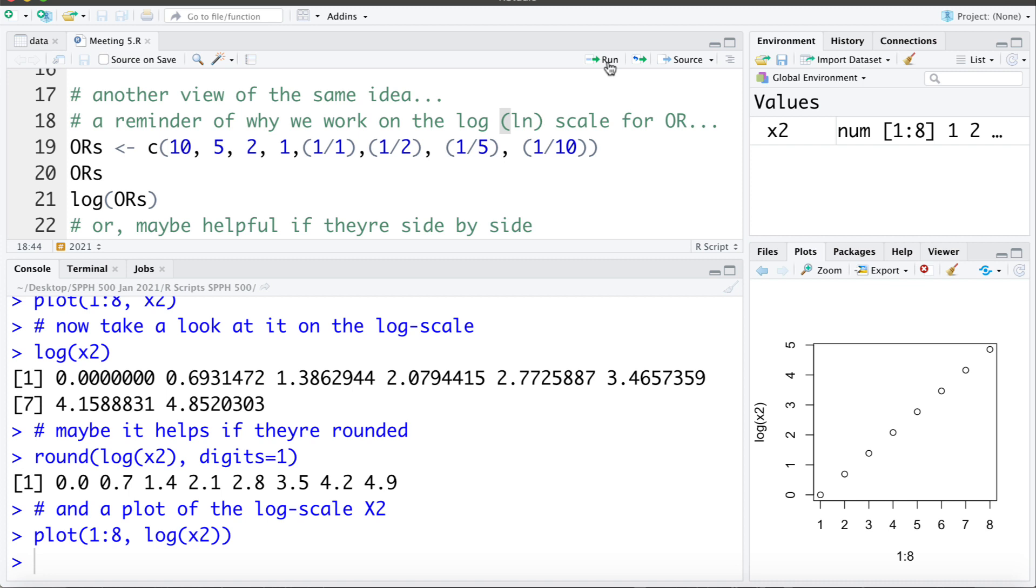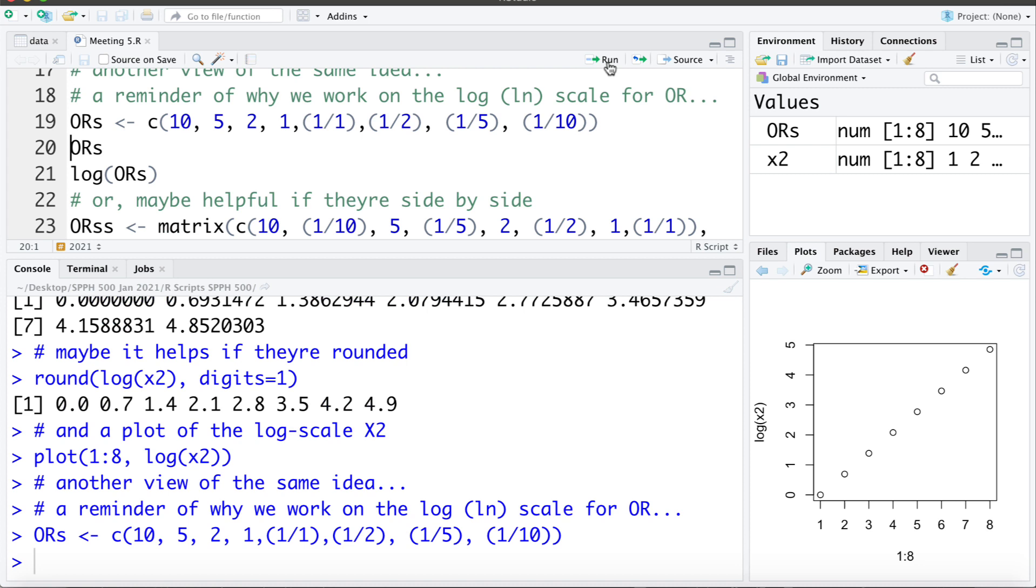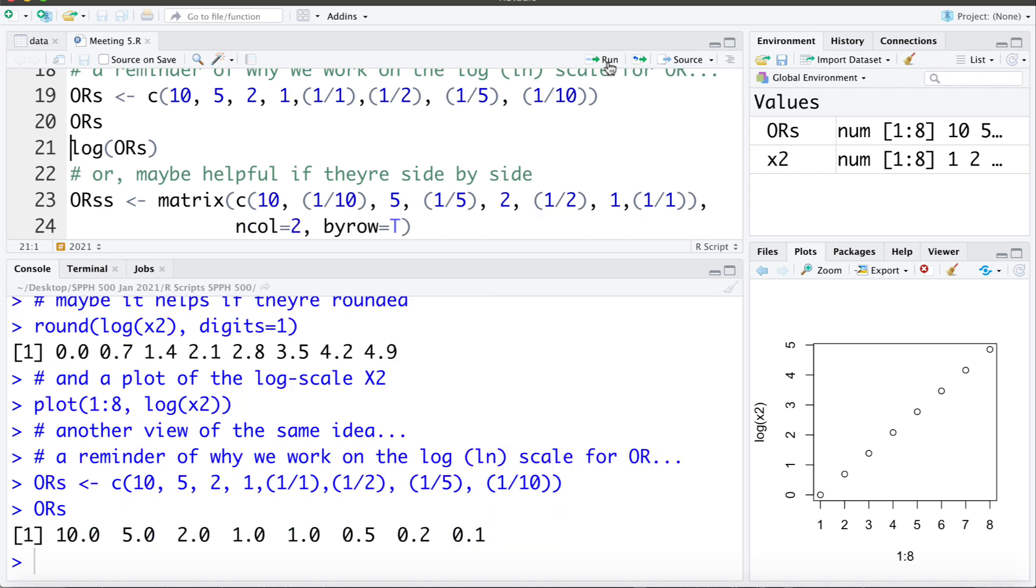10 over 1 and 1 over 10 are just flipping what's on the top and the bottom. Same with the odds ratio of 5 and 1 fifth. If the exposed have 5 times the odds of the unexposed, the unexposed have 1 fifth of the odds of the exposed. So let's just fill in those odds ratios there and remember 1 being the null value. 1 meaning the odds of disease for the exposed and the unexposed are the same. The numerator and the denominator in the odds ratio are the same. So there's those odds ratios, now let's take a look at them on the log scale.